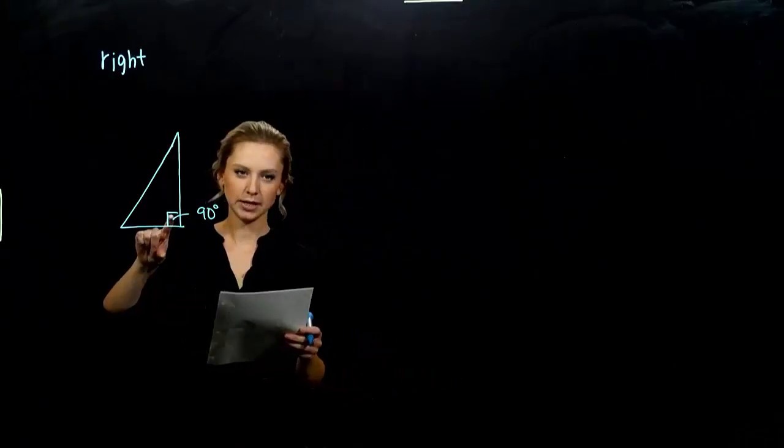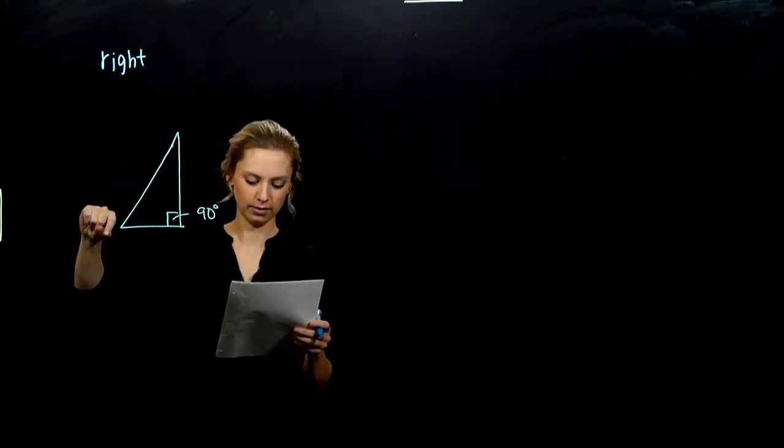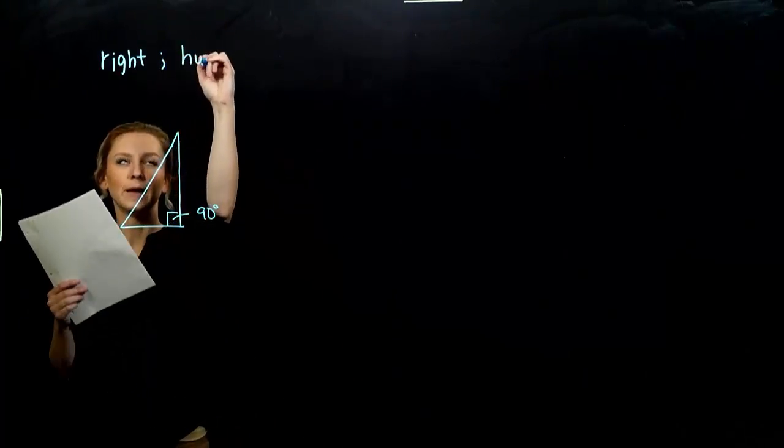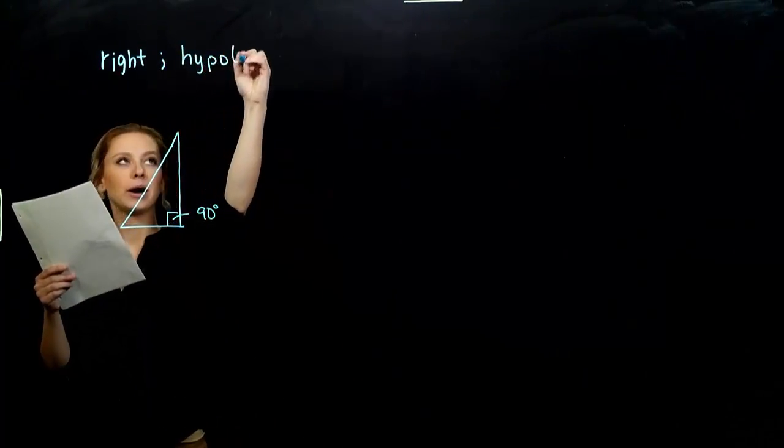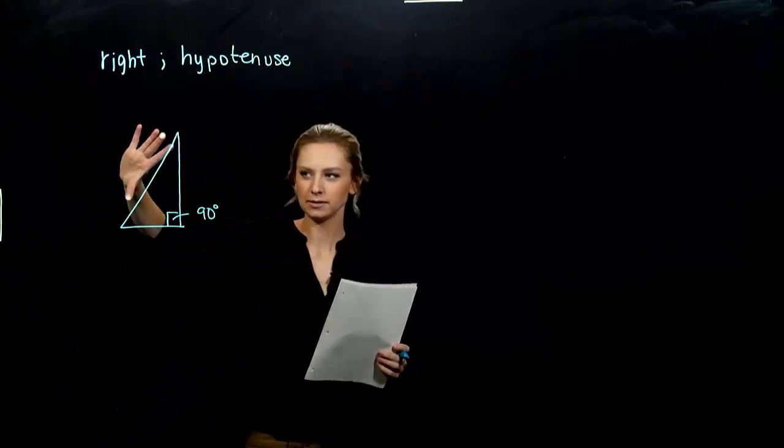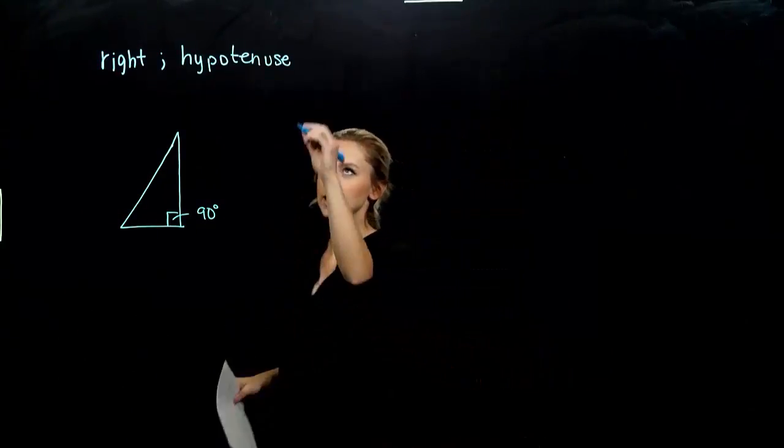The side opposite the 90-degree angle, the longest side of the triangle, is called the hypotenuse. The other two sides are called the legs of the triangle. If we give these some labels, I'm making a leg down here A, the other leg B, and the hypotenuse is going to represent that length with C.